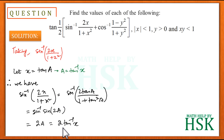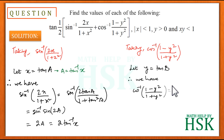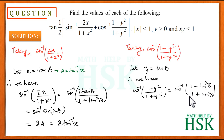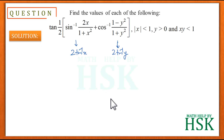Now taking cos⁻¹((1-y²)/(1+y²)). Here we substitute y = tan(b), so cos⁻¹((1-y²)/(1+y²)) = cos⁻¹((1-tan²(b))/(1+tan²(b))) = cos⁻¹(cos(2b)) = 2b. Since y = tan(b), we have b = tan⁻¹(y), so this expression simplifies to 2tan⁻¹(y).